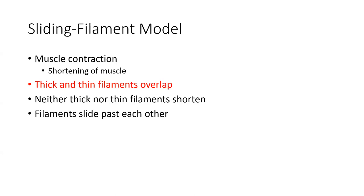Muscle contraction is basically the shortening of the sarcomere. Because that is the most microscopic unit of muscle, if the sarcomere shortens, that brings about shortening of the myofibril, shortening of the muscle fiber itself — that cellular unit — as well as the entire muscle body. This happens as the thick and thin filaments drag one another, specifically the thick dragging the thin towards the center of the sarcomere.